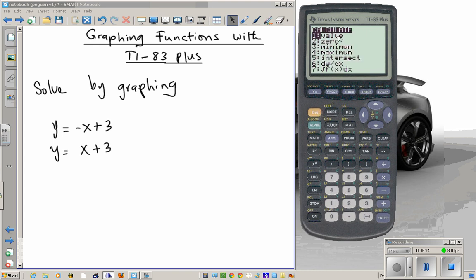If I go second function trace, it gives me the different calculations you can do on the graph. The value, 0, min and max, intersection, the slope of the tangent line given by the derivative at a particular point, or the area under the curve, your integral. So integral, derivative, intersection, max and min, and then 0 and value. We're looking for the intersection here, because that's what the solution is by definition. So I select 5.